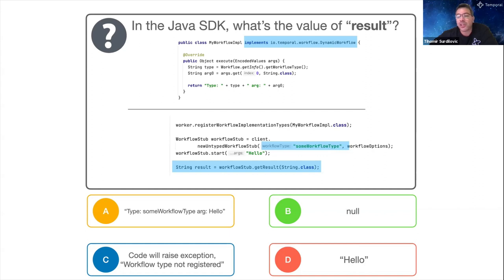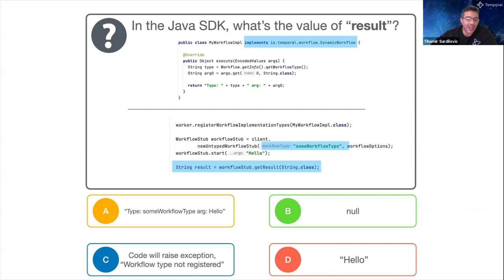We define an untyped workflow stub passing the type string 'some_workflow_type' - not the name of the MyWorkflow class - and start the workflow passing in 'hello', waiting with getResult for it to finish. Options: A, type 'some_workflow_type' arg hello; B, null; C, code raises exception workflow type not registered; or D, just hello.